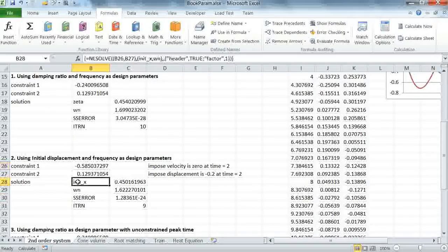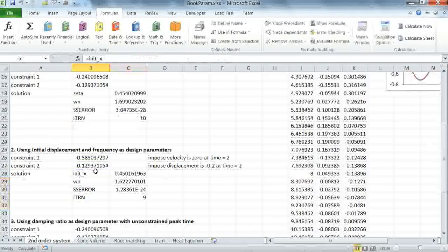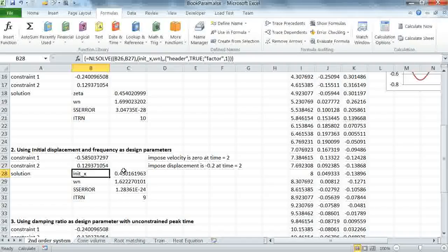Now I repeat the same call here. But notice the only difference is my constraints now are the new constraints, and I'm also changing now the initial x and omega n. Again, I can run this to compute the new solutions, and it gives me a new value for the initial x and omega n.